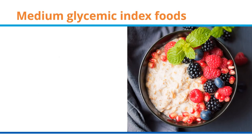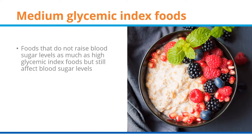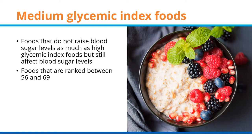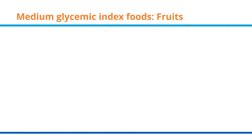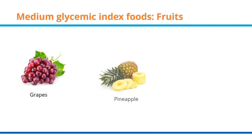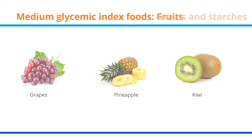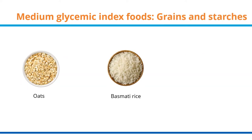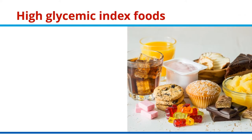Medium glycemic index foods do not raise blood sugar levels as much as high GI foods, but they still affect blood sugar levels. They are ranked between 56 and 69 and include fruits such as grapes, pineapple, and kiwi, and grains and starches such as oats, basmati or brown rice, and corn.